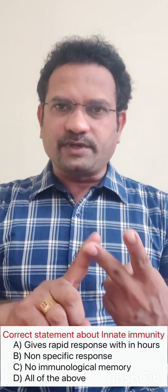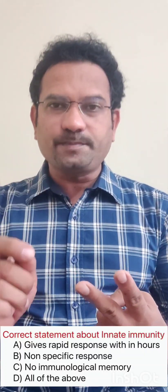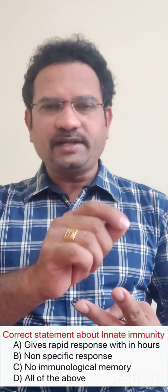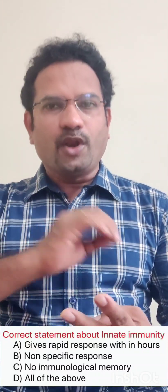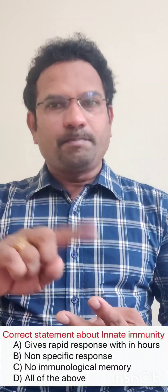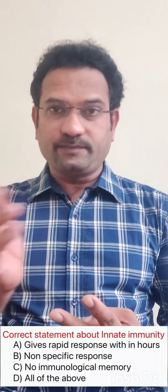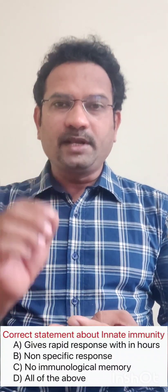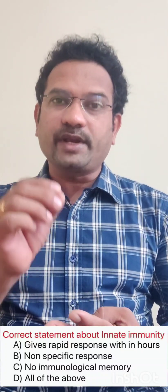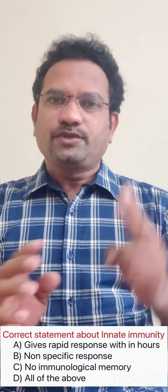Now option B: non-specific — this is true for innate immunity. The response is non-specific, meaning whether you have a bacteria, virus, or any organism, it non-specifically goes and attacks. But acquired immunity is not like that — it is highly specific. In the case of B-lymphocytes, they release antibodies which are very specific to a particular pathogen.